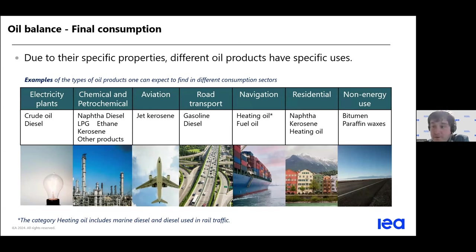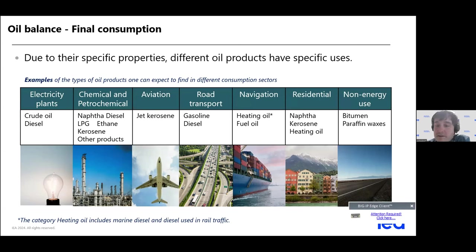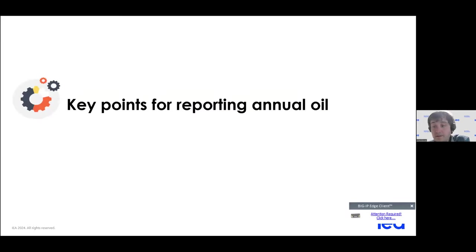Just a few examples of what happens on the demand side: for consumption, as you know, there are many different types of use for oil products. For electricity, crude oil can be directly burned; kerosene for aviation; diesel and gasoline for road transport; and many other kinds of non-energy use, for example white spirit, lubricants, and so on.